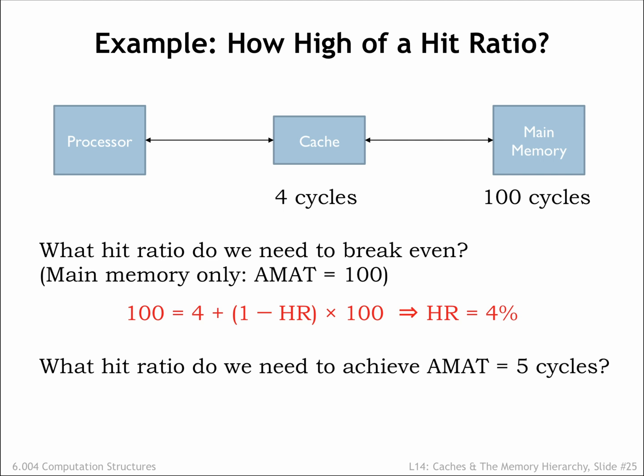Suppose we wanted an average memory access time of 5 cycles. Clearly most of the accesses would have to be cache hits. We can use the average memory access time formula to compute the necessary hit ratio. Working through the arithmetic, we see that 99% of the accesses must be cache hits in order to achieve an average access time of 5 cycles. Could we expect to do that well when running actual programs? Happily we can come close! In a simulation of the SPEC CPU2000 benchmark, the hit ratio for a standard-sized Level 1 cache was measured to be 97.5% over some 10 trillion accesses.